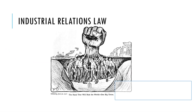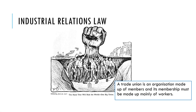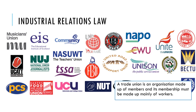Industrial relations law relates to trade unions. A trade union is an organization made up of members, mainly workers within a particular industry — for example, a teachers' union or a car workers' union. Any laws relating to that group of people and trade unions we call industrial relations law. On screen are examples of different unions you might find.